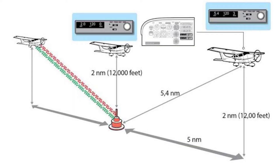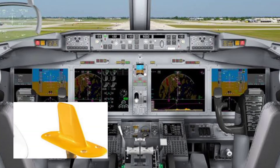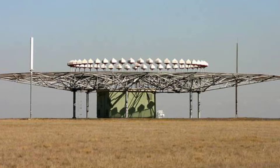Before this, we have to know that the DME system consists of a DME transceiver, display, and antenna, as well as the ground-based DME unit and its antenna.